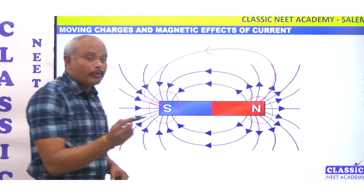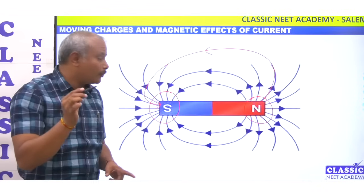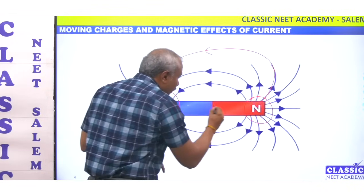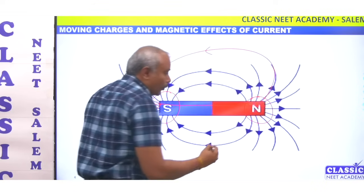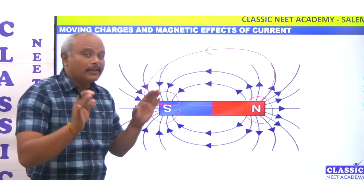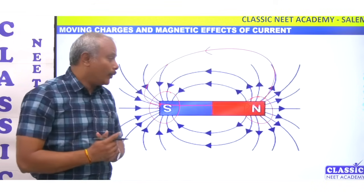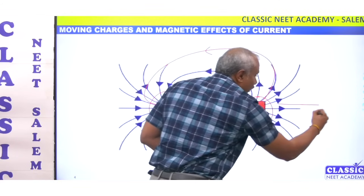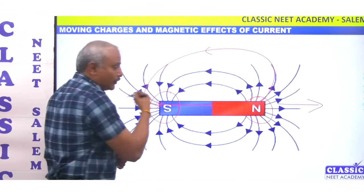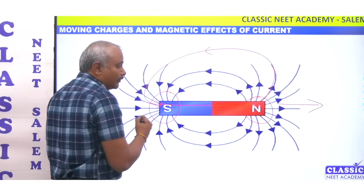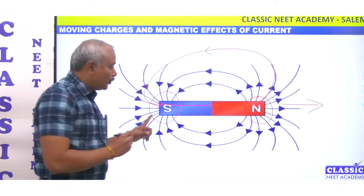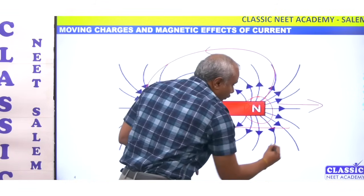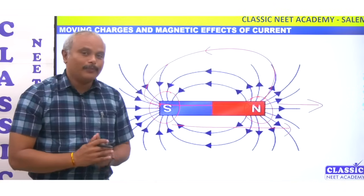This is a closed loop form with North Pole and South Pole. Inside the magnet, South Pole connects to North Pole. North Pole is in one direction, South Pole is in the other direction. The magnetic moment is always going from South to North.